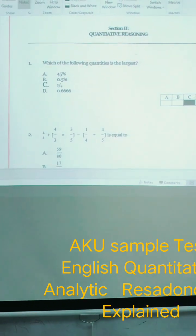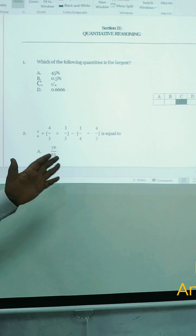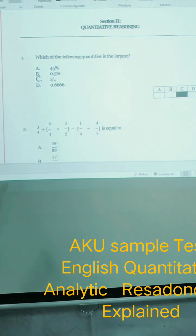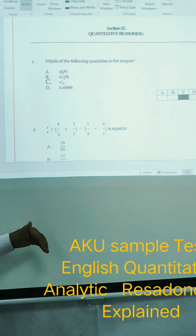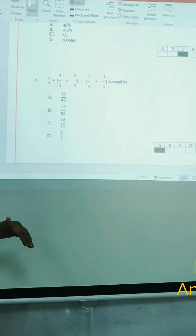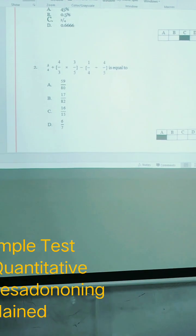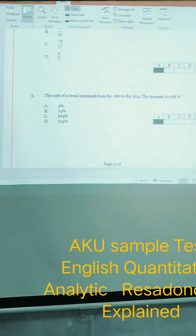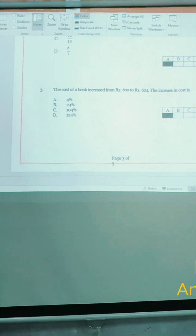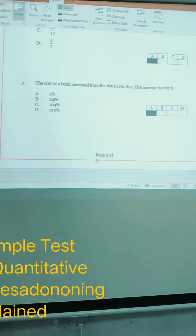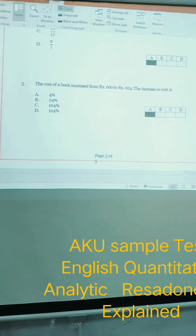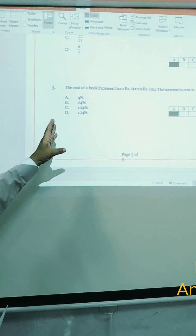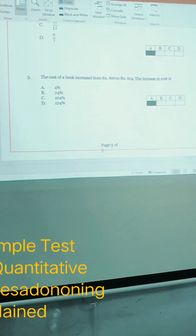Question 1: Which of the following quantities is the largest? And you can see that C is the option. Question 2 says which one is equal? So option A is correct. And here you can see 59 upon 80. The cost of the book increased from 600 to 625. The increase percentage is a small increase. So you can see that you have a small figure A.